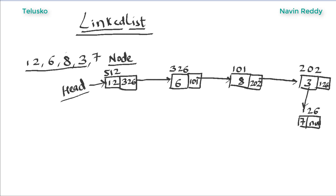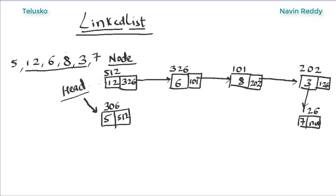Can we add a value at the start? Yes, it's quite possible. You just create a new node — say I want to add value 5 before 12. So the value is 5, and now 12 is no longer the head element. The new head element is 5, at address 306. In node 5's address field, you put the address of 12, which is 512. So after 5 we have 12, after 12 we have 6, after 6 we have 8 — that's how you add a value at the start.